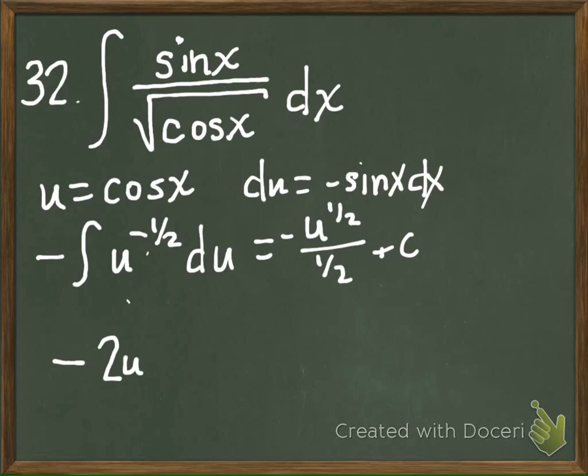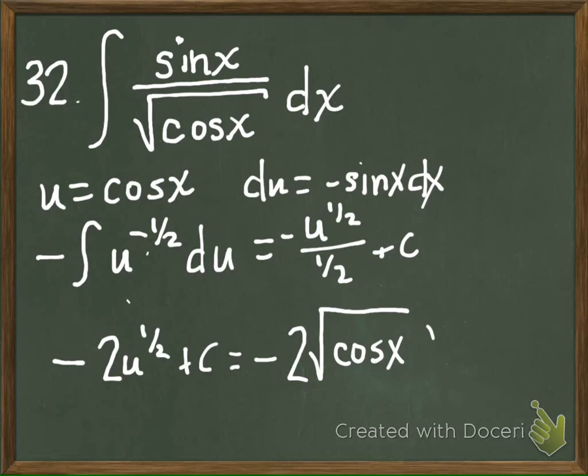Okay. And what was our U? Cosine X. Oops, wait a minute. It's square root of cosine X, isn't it? Yes. Since it's to the one-half.